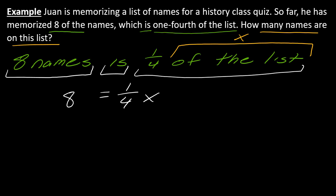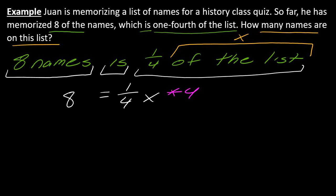Notice what finding the equal sign did for us — it helped us break this problem into little chunks so we could figure out each part. The tricky part was figuring out the right side, but the left side was a lot more straightforward. Now it's just a matter of solving. I want to get rid of the fraction, so I'm going to multiply by the denominator on each side. X is going to equal 32. So there are 32 names on that list.